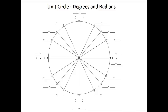Here is our unit circle, so let's go ahead and fill it out. First we're going to do the degrees and radians on this page, and then on the next page we're going to do the distances, which are equivalent to our trigonometric ratios.